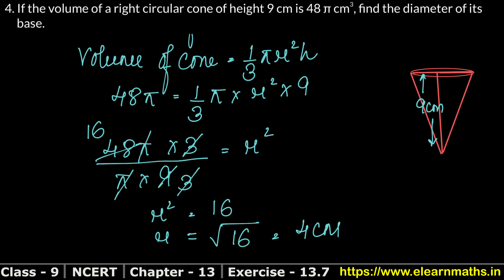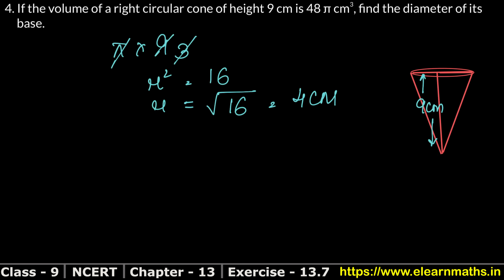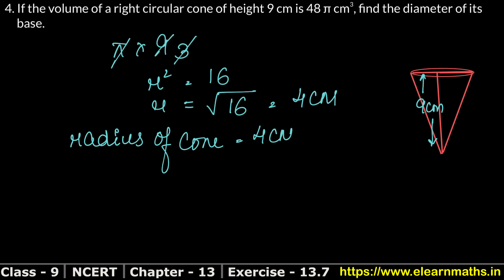Hence the radius of the cone is 4 cm. Since diameter equals 2 × r, the diameter of the base is 2 × 4 = 8 cm.